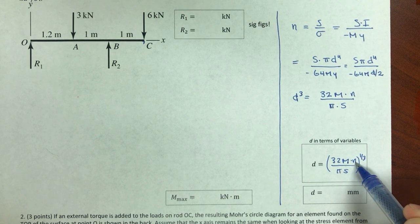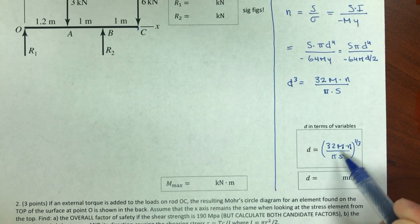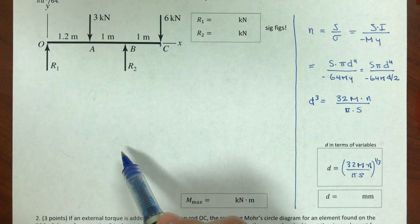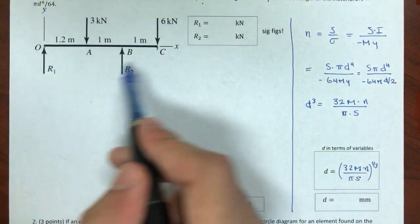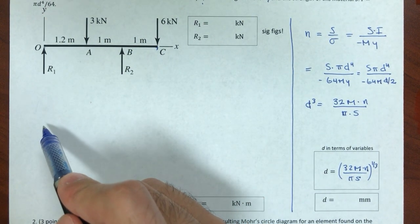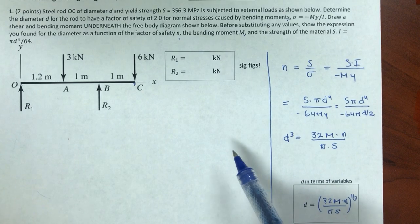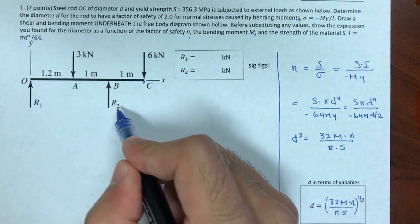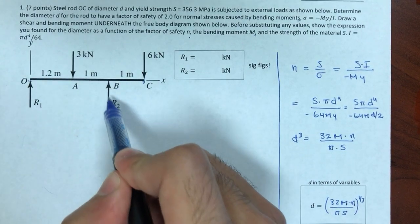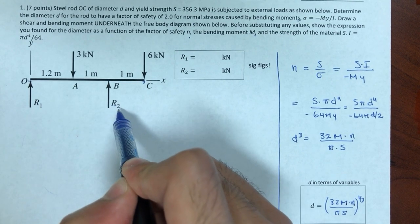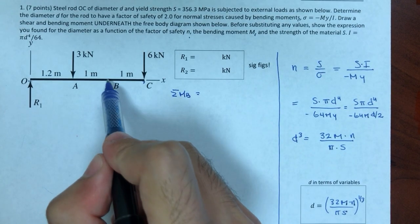Now I need M. I have the factor of safety and the strength of the material, but I don't have the maximum moment. I can find where the maximum moment occurs due to these loads, or just do the shear and bending moment diagrams. I need the reactions first — I don't have R1 and R2, but I can find them by summing moments about O or B to eliminate variables.